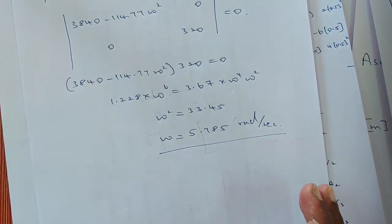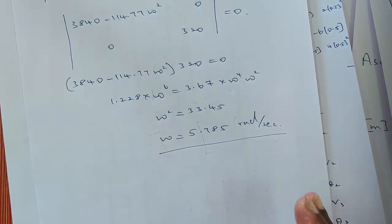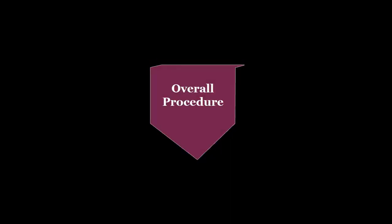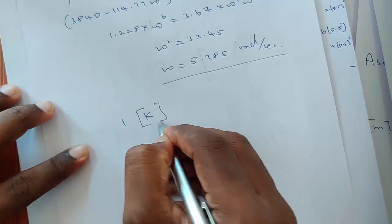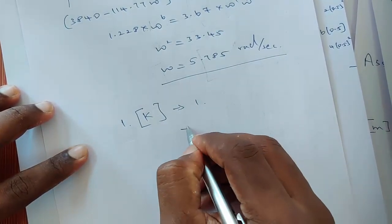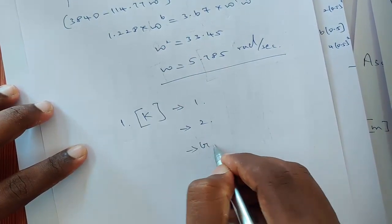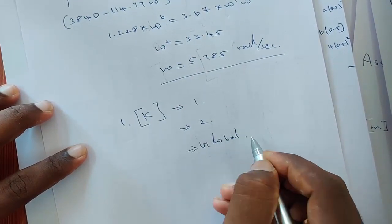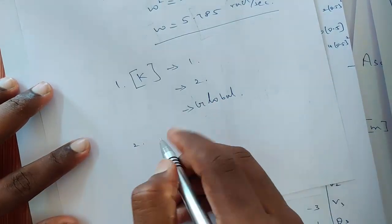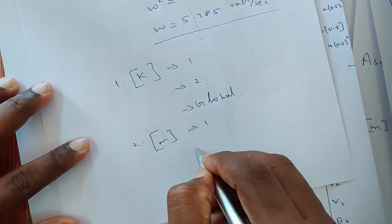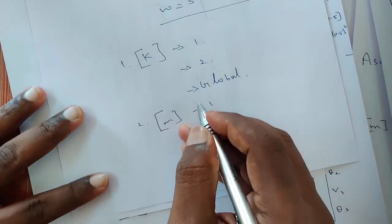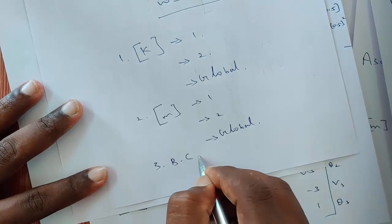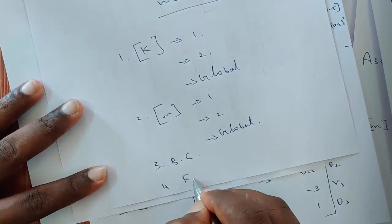We can also calculate the natural frequency using the consistent mass matrix; the notes for that are uploaded in the description. To summarize the steps: step 1 is calculation of the K matrix for element 1, element 2, then the global K matrix; step 2 is calculation of the mass matrix for element 1, element 2, then the global mass matrix; step 3 is applying boundary conditions; and step 4 is finding the solution. Thank you.